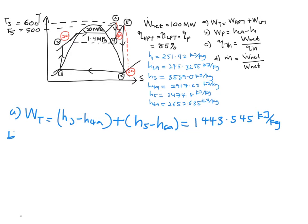Next part is to find your work pump, which is in between your state 1 and your 2A over here. So H2A minus your H1 is equal to 23.9055 kJ per kg.